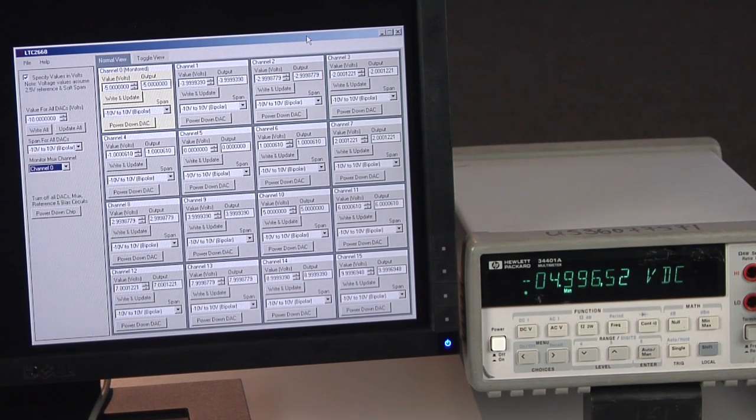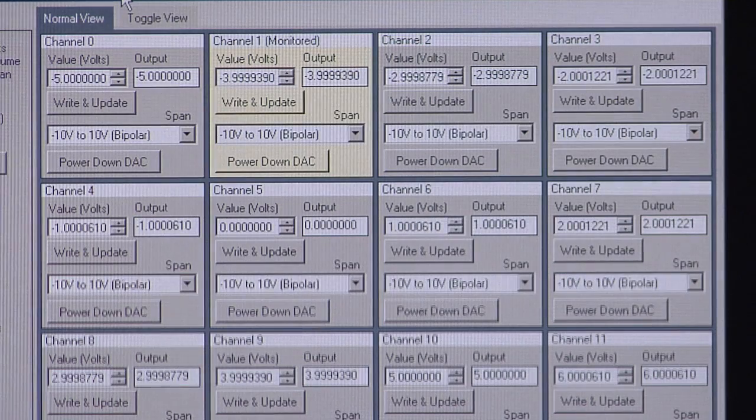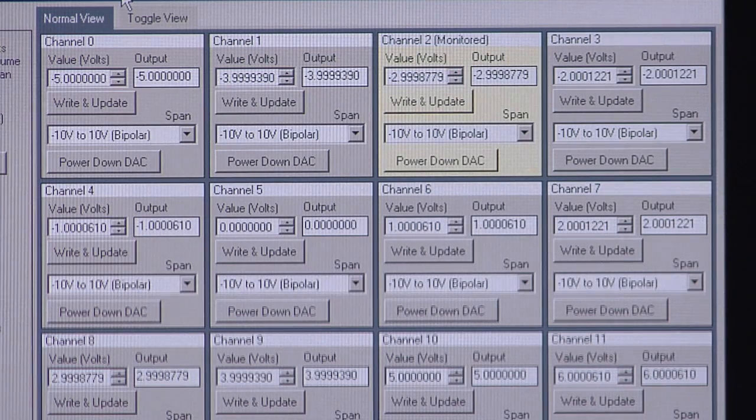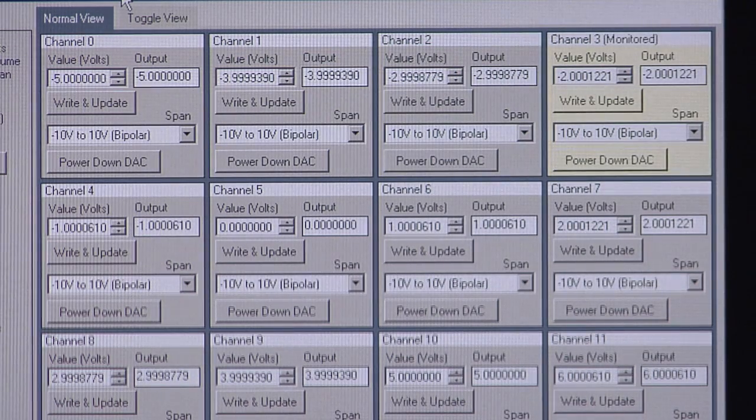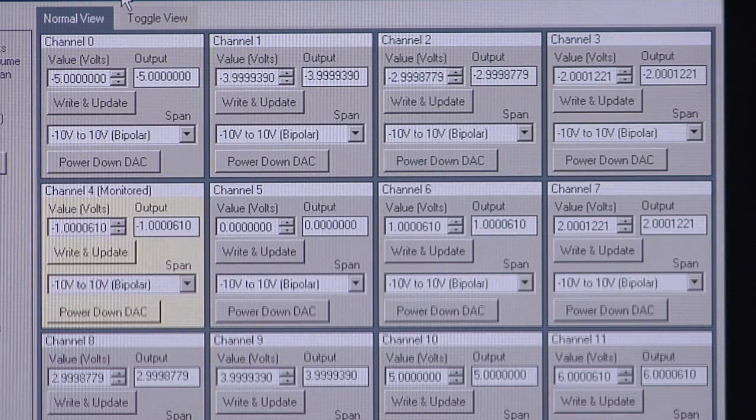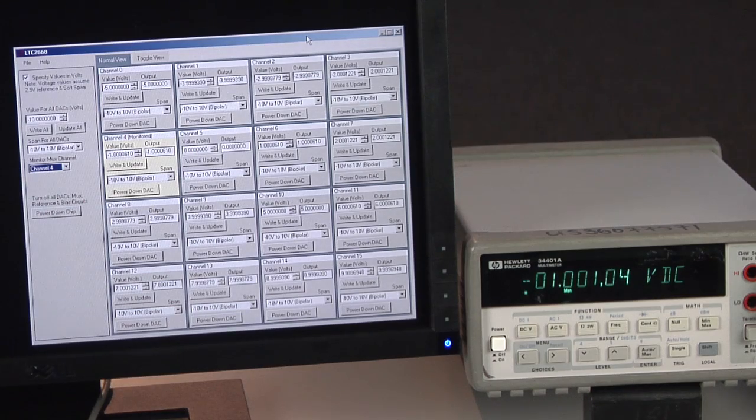Here, we've set the DAC outputs to a staircase of voltages from minus 5V to plus 10V in 1V steps. An Agilent 34401A meter is measuring the MUX output. Scrolling through the monitor MUX channels allows each channel to be measured by the meter for this demonstration, which could be an onboard ADC in your application.